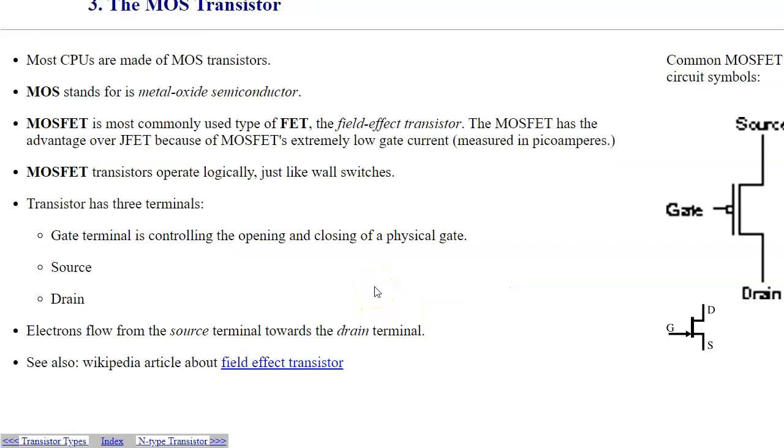A typical transistor that's used in modern CPUs is based on metal oxide semiconductor technology. It has three terminals: gate, source, and drain. Primarily what happens is that electricity flows from the source to the drain. However, this flow of electricity can be controlled by the signal supplied to the gate.